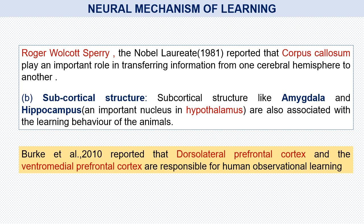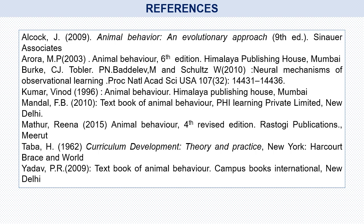Subcortical structures — structures that are not part of the cerebral cortex — such as the amygdala and hippocampus, which are parts of the midbrain, are also associated with learning behavior of animals. Brooke et al. (2010) reported that the dorsolateral prefrontal cortex and the ventromedial prefrontal cortex are responsible for human observational learning. The following books and journals were consulted for the preparation of this presentation.